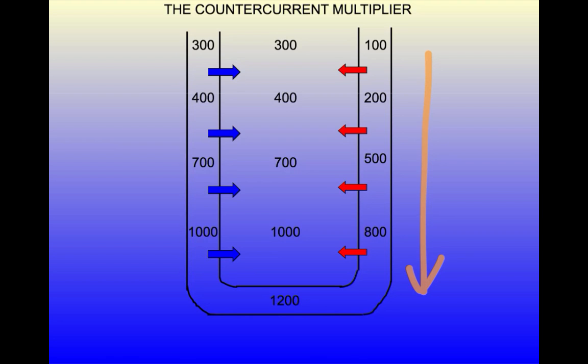This gradient makes it possible to create either a concentrated or a dilute urine. The hairpin or counter-current configuration of the loop is important in creating and maintaining this gradient.